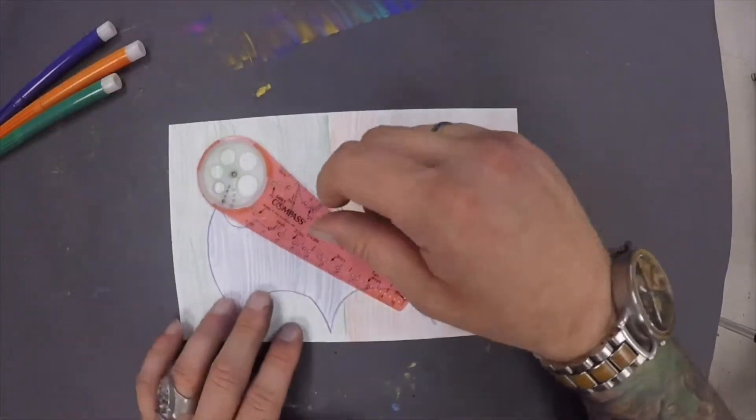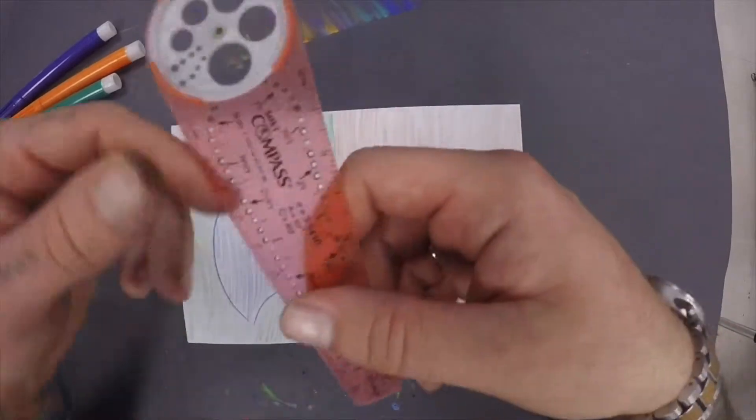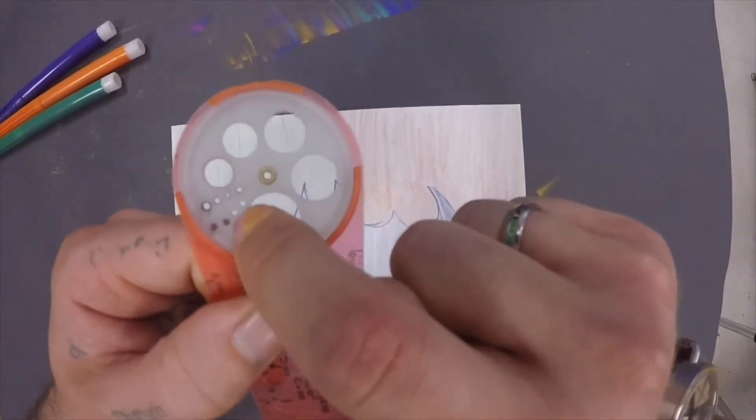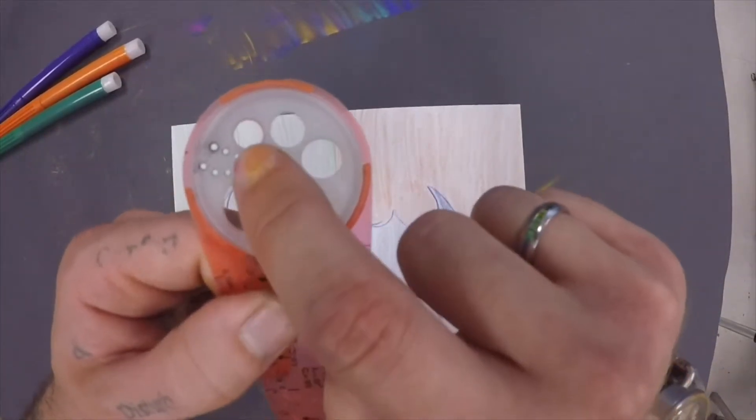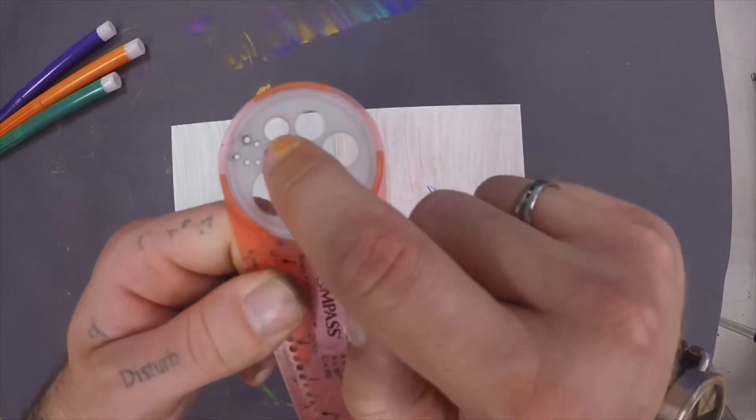So we're also going to be using this tool. This is called a compass. We're going to be using this part of the compass. Specifically we're going to be using that smallest circle right there.